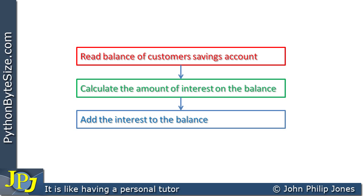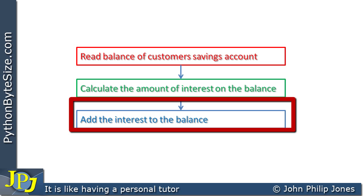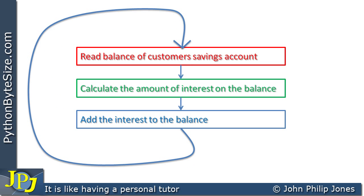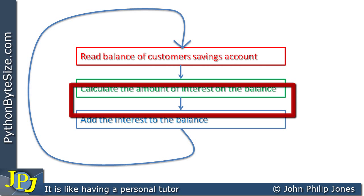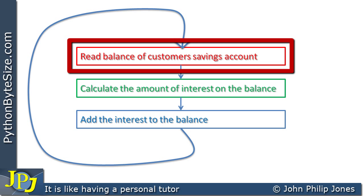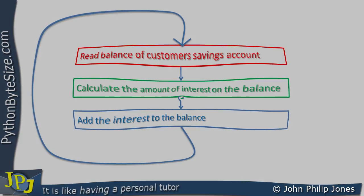Here we can see the three steps again: read the balance of the customer's savings account, calculate the amount of interest on the balance, add the interest to the balance, then repeat for the next customer. The number of times we go around depends on how many customers have savings accounts — if there are a thousand customers, we go around the loop a thousand times.